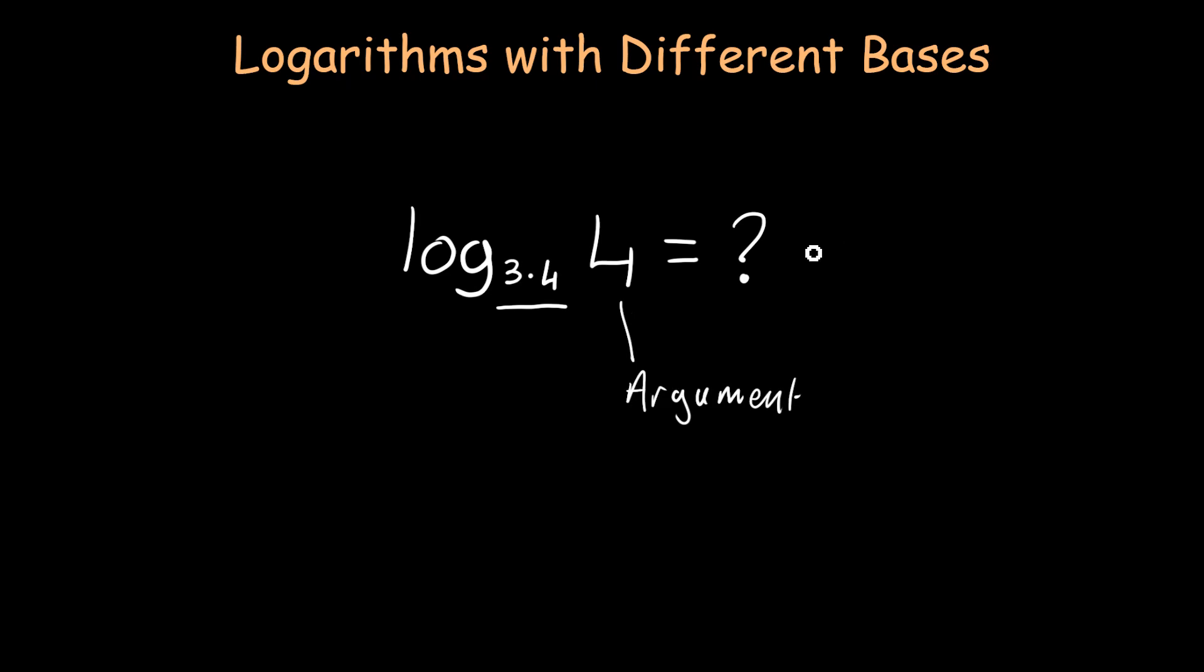What we want to do is try and find what the power is. If we were to rewrite this log as an exponential, it would look something like this. So 3.4 is our base. We don't yet know what our power is, but we know that this sum here is equal to 4. So there is a formula to solve this type of exponential.